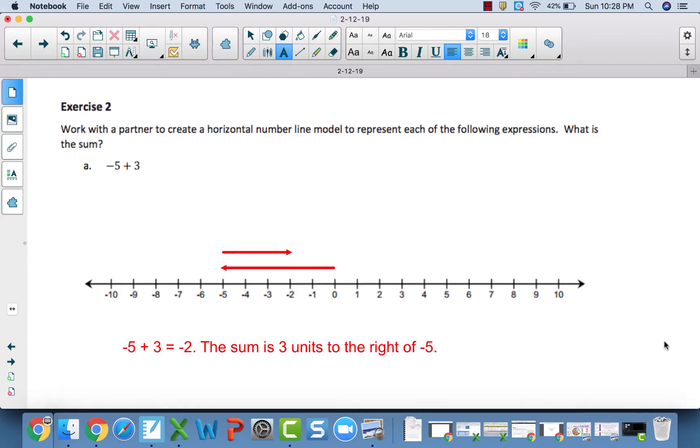For exercise 2, part A, you should have got a sum of negative 2. I used the arrows, the vector method, in order to display this on the number line. You could have also used the hops. Either way works. Should end up at negative 2. And notice that the sum, negative 2, which is where we ended, that second arrow, is 3 units to the right of negative 5.